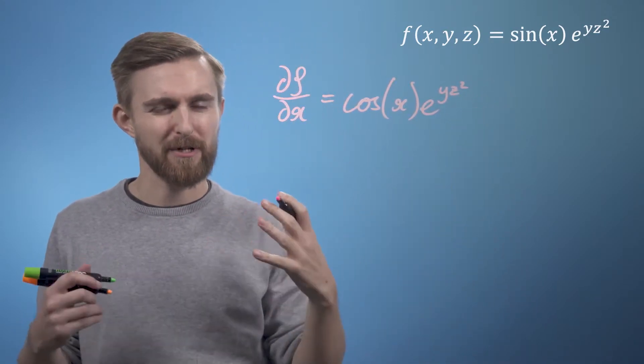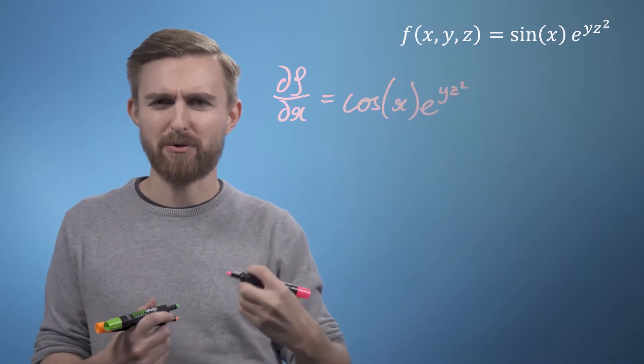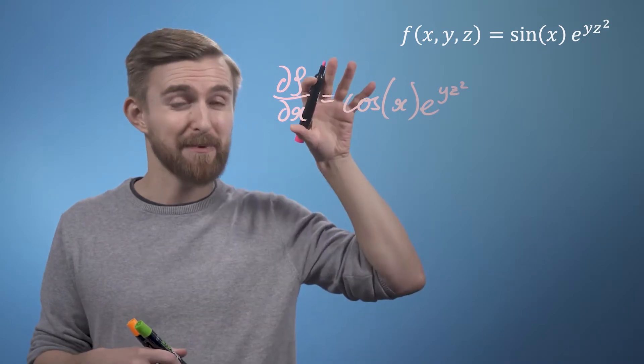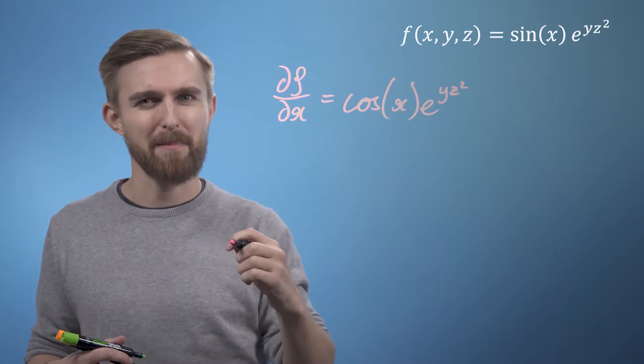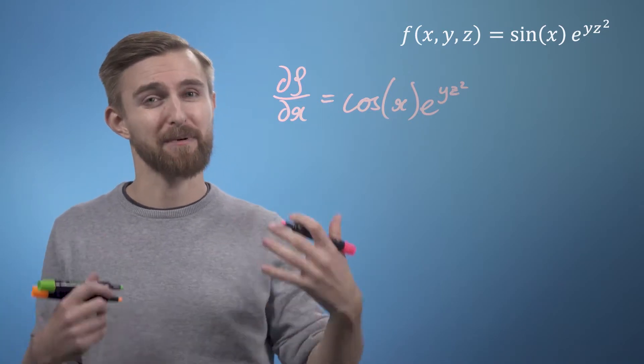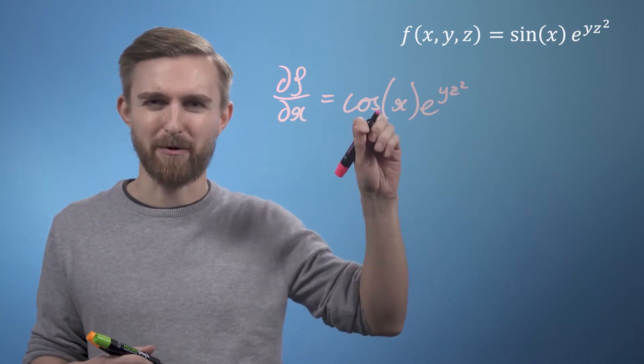Next we'll differentiate with respect to y. In this case the sine term does not refer to y, so we treat this as a constant, but for the exponential term we can either apply the chain rule to it, or just remember that the result of this operation for an exponential will just be to multiply the derivative of the exponent to the front.